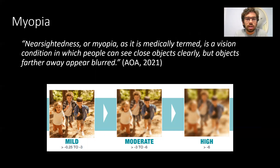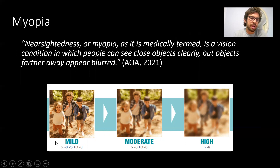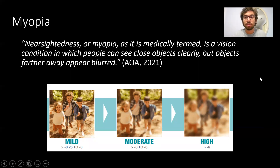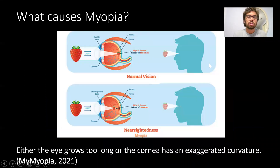This image below shows some children illustrating different levels of myopia. With mild myopia, they can see things this close very clearly. With moderate myopia, even things this close still have somewhat blurry vision. And with high rates of myopia, you can see it's very fuzzy, very blurry, very difficult to see. So what actually causes myopia?